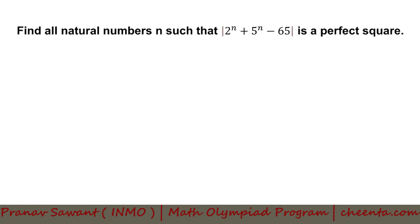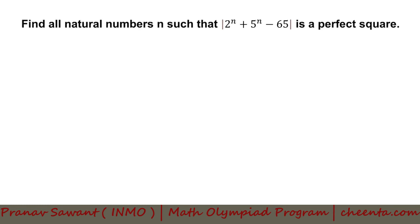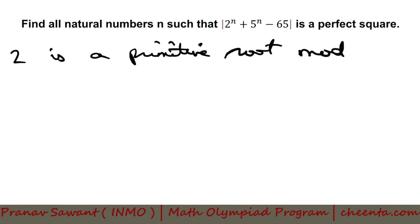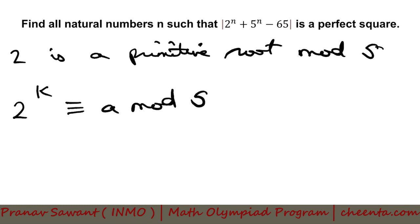What you can basically see is that we have 5, 5 raised to the power n, and 65, which are both really multiples of 5. And if you know a little bit about primitive roots, you can see that 2 is a primitive root mod 5. That basically means there will exist an integer k so that 2 raised to the power k is congruent to a mod 5 for all integers a coprime to 5. Now we can see that 2 is a primitive root mod 5, we have 5^n which will be a multiple of 5, and we have 65 — so we kind of get the intuition that we will have to work mod 5.